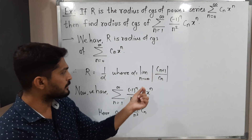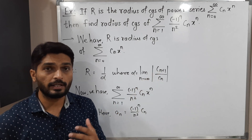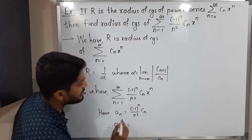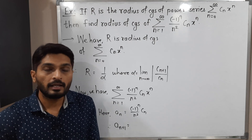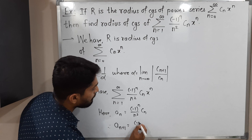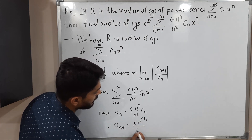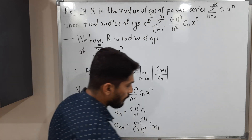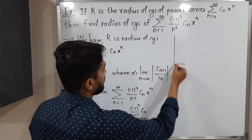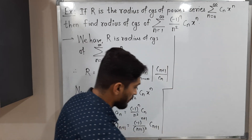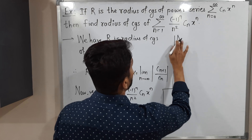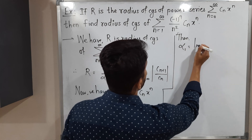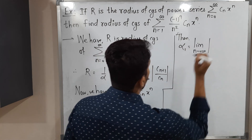Using the same formula, at the place of cₙ₊₁ and cₙ we have aₙ₊₁ and aₙ. So we find aₙ₊₁ by replacing n by n+1 everywhere: aₙ₊₁ = (-1)^(n+1) / (n+1)² · cₙ₊₁. We call the corresponding α value α₁, with the same definition: limit as n tends to infinity of |aₙ₊₁ / aₙ|.